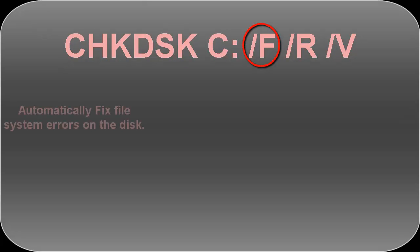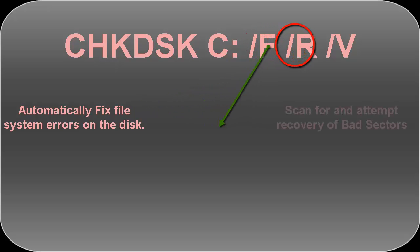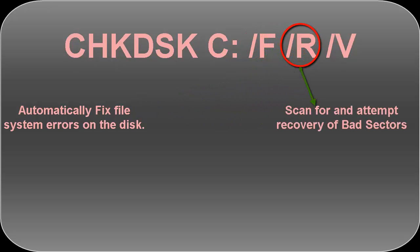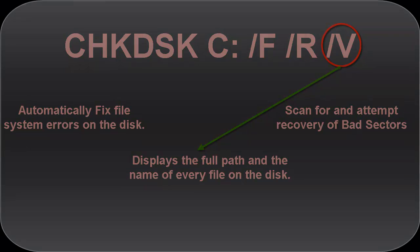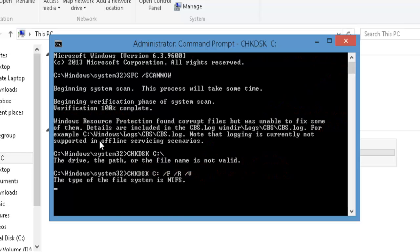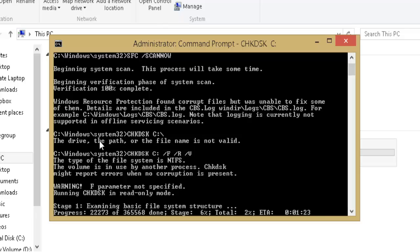The parameters F, R, and V each have their own importance. Parameter /f automatically fixes file system errors on the disk. Parameter /r scans for and attempts recovery of bad sectors. Parameter /v displays the full path and name of every file on the disk. Once you type the command in the command prompt and hit Enter, it will start scanning all files on the system. It will take some time depending on the size of the disk and total number of files. Do not close CMD before it completes.